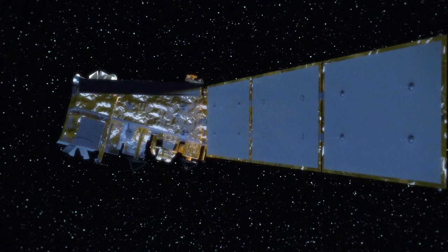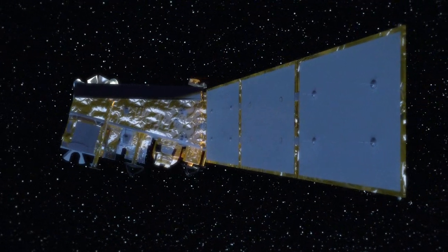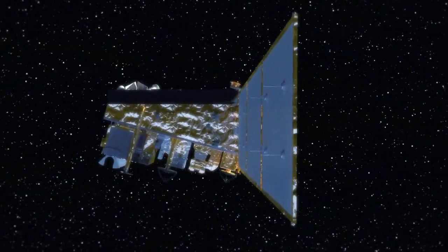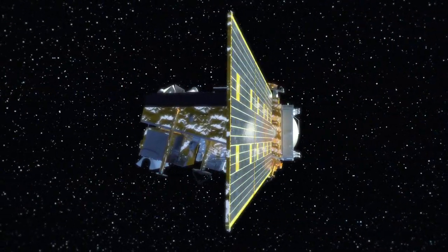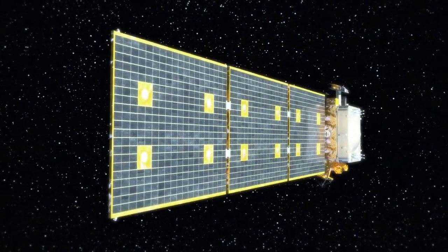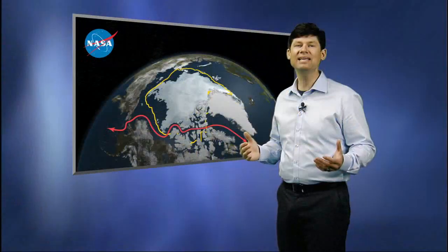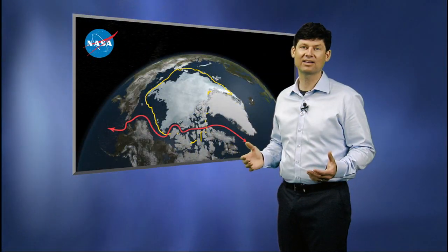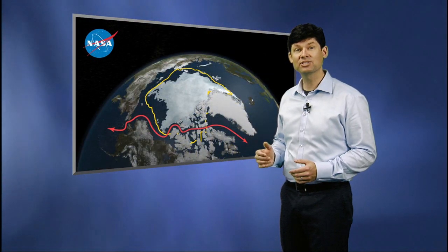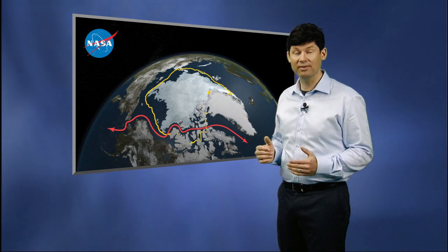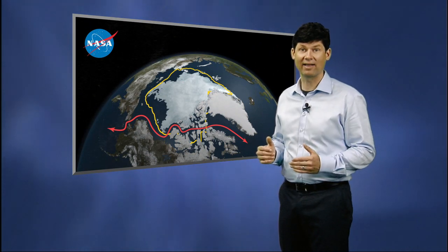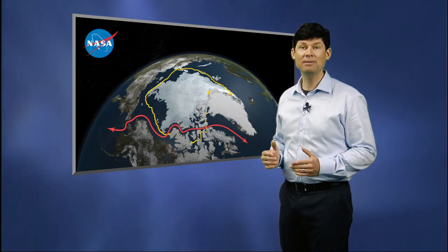We also have radars that can penetrate the ice and map the bed underneath it. But probably the most important and unique thing we do is study the ice with satellites. We need satellites because these polar ice sheets are so vast — you need a satellite to get the coverage. And next month we're going to launch the next polar orbiting weather satellite called NPP.